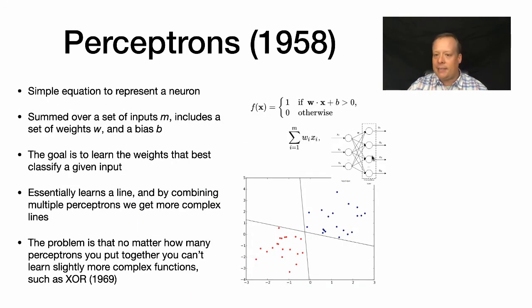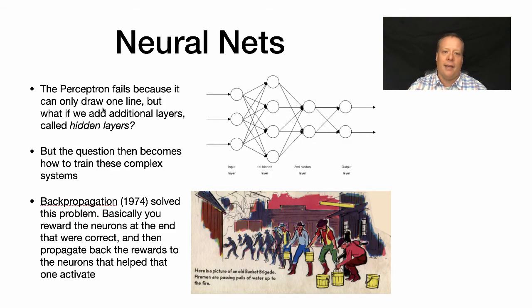By putting in these hidden layers that were not the input layer or the output layer, you could allow for non-linear combinations of inputs to occur. But the question then became, how do you train these complex architectures? With all these hidden layers, how do you figure out the correct weights to add on there?